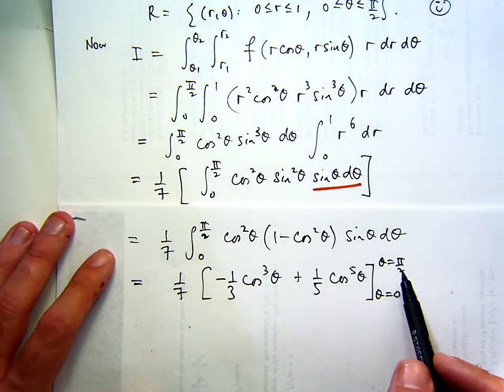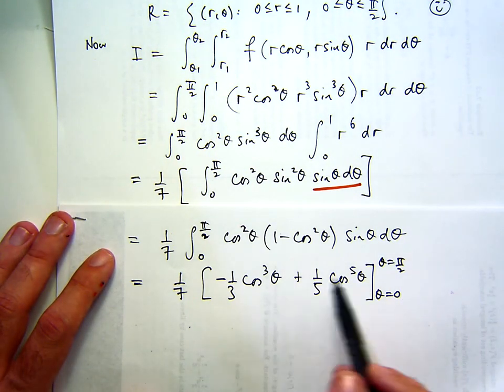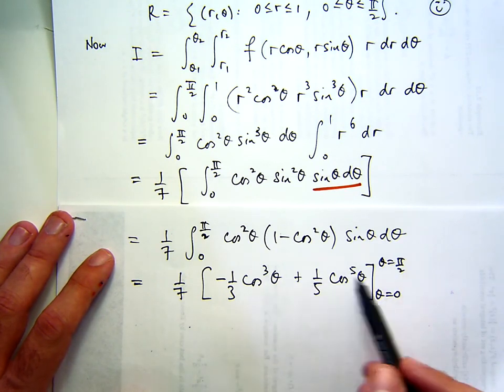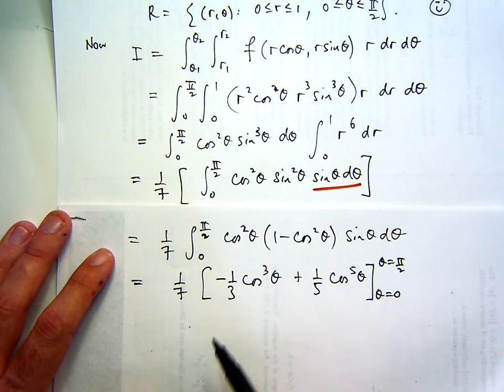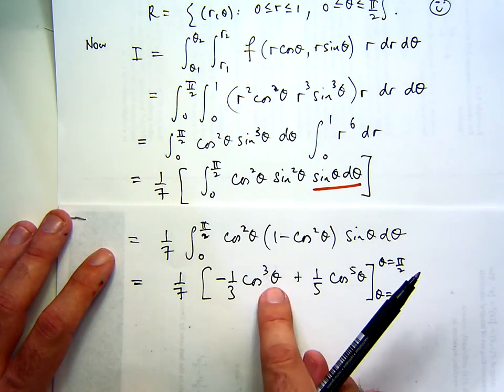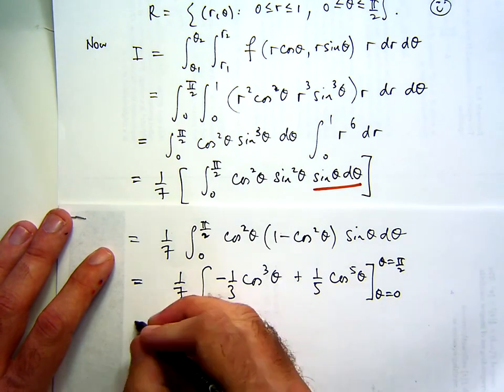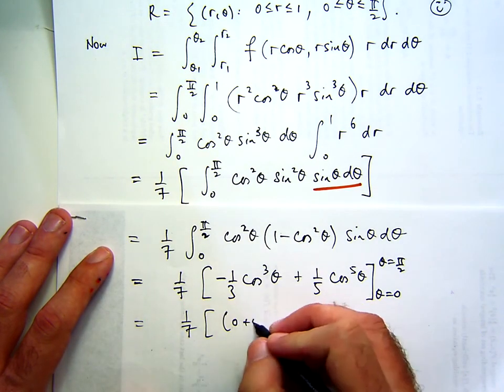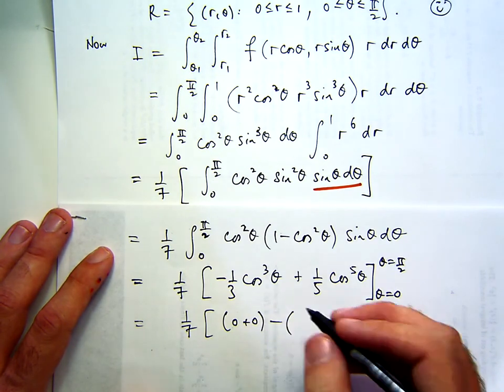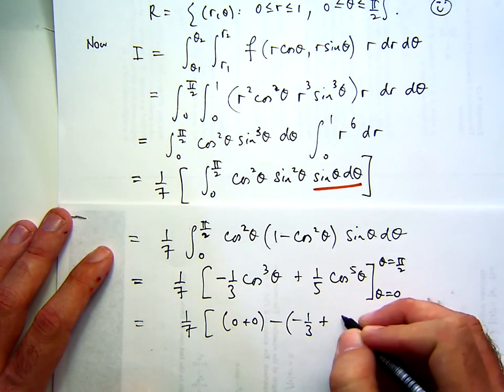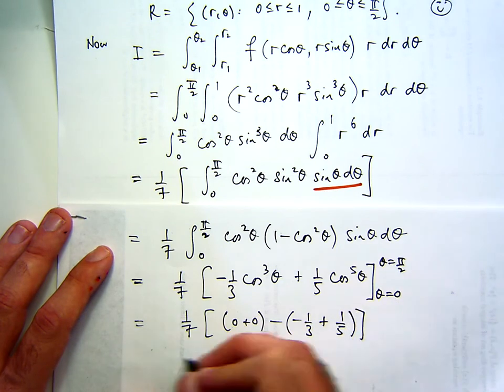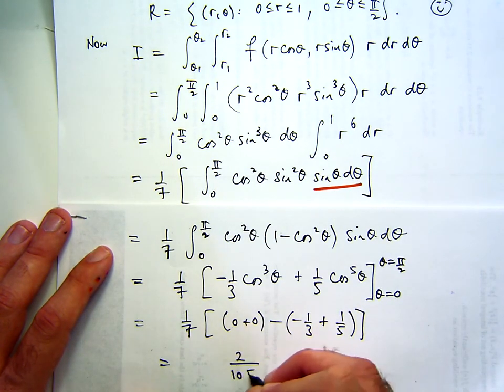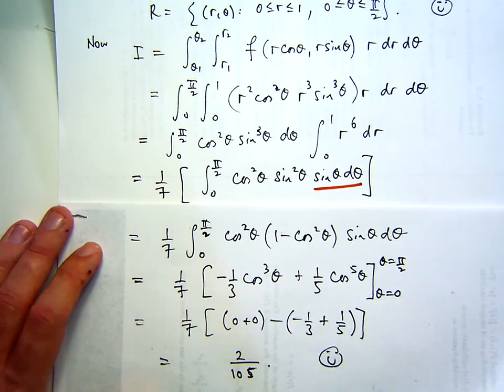Okay, so if you plug in pi on two, they're both going to be zero. And if you plug in theta equals zero, that's going to give you a one and that's going to give you one. So you're going to get something like this according to my calcs. And if you clean that up, you'll get the following.